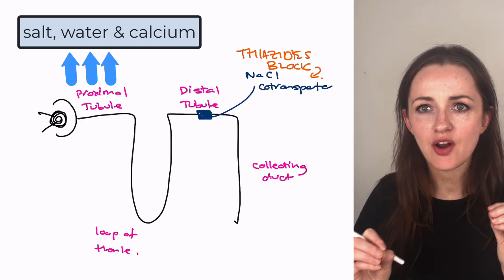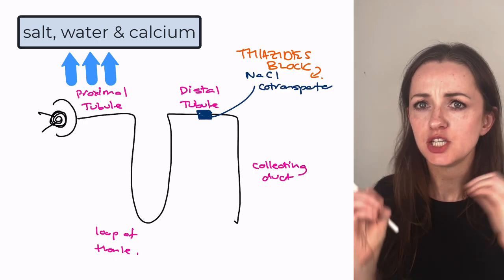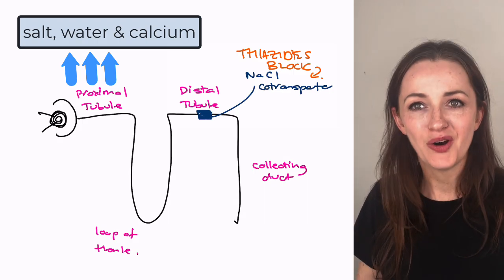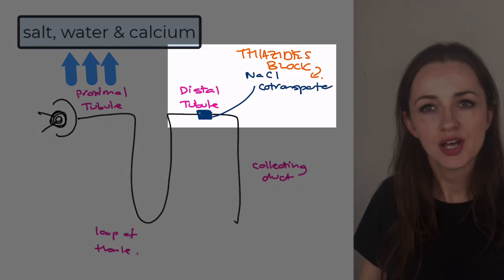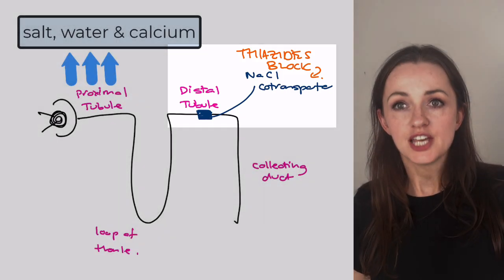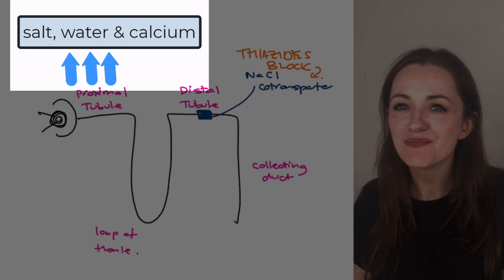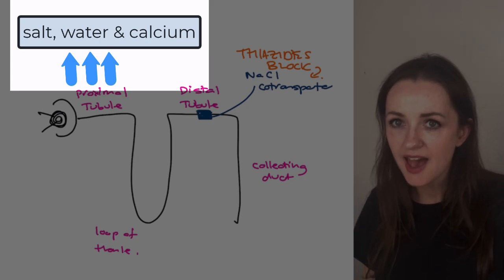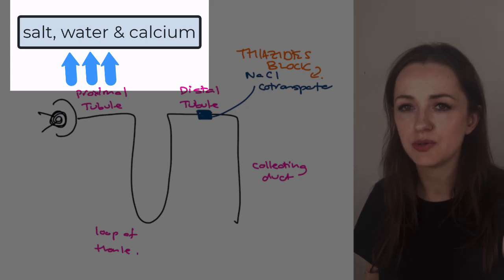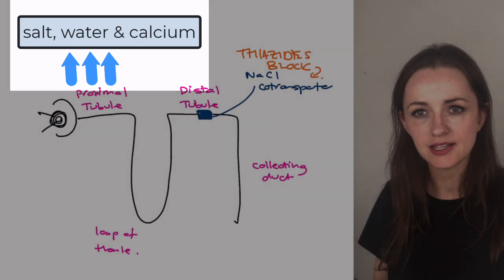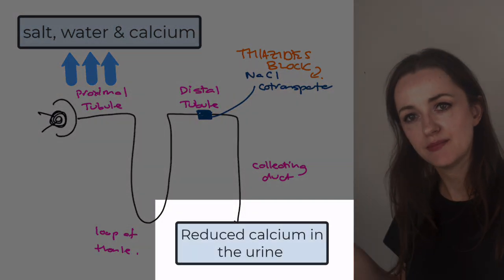So to summarize, lock this in for me for your MCQs and exams. If you block the sodium chloride cotransporter with a thiazide, this will ramp up salt and water reabsorption in the proximal tubule, which can increase your calcium reabsorption. So more calcium going back into the body, less calcium into the urine.